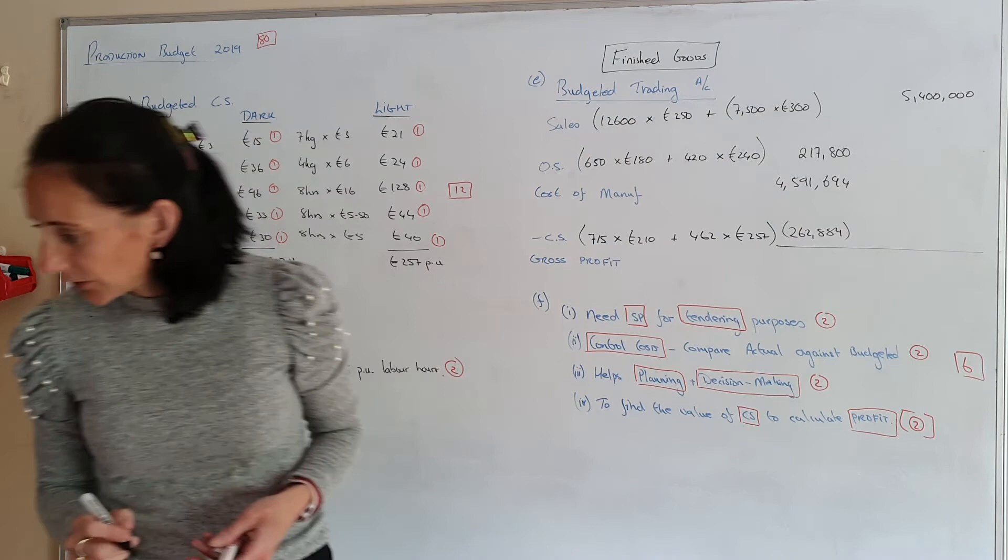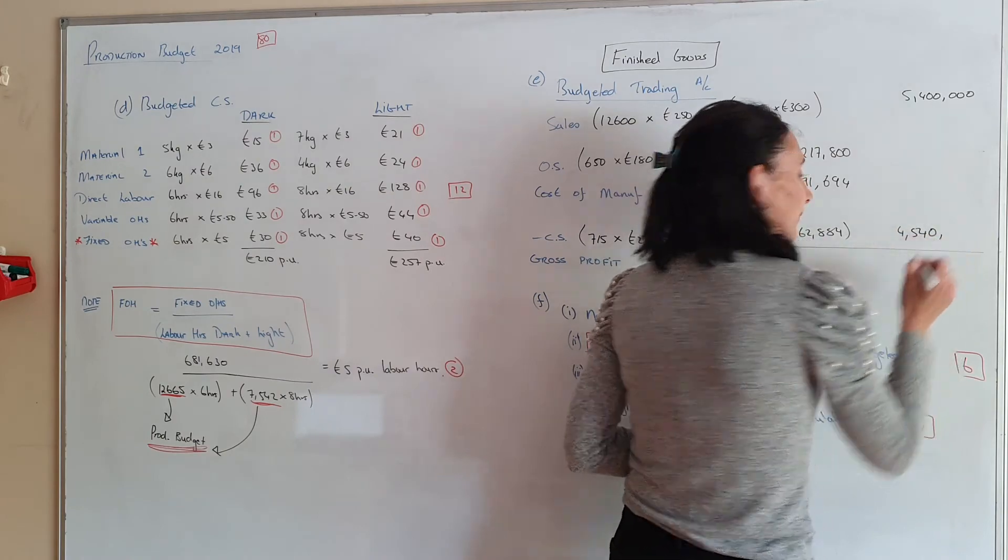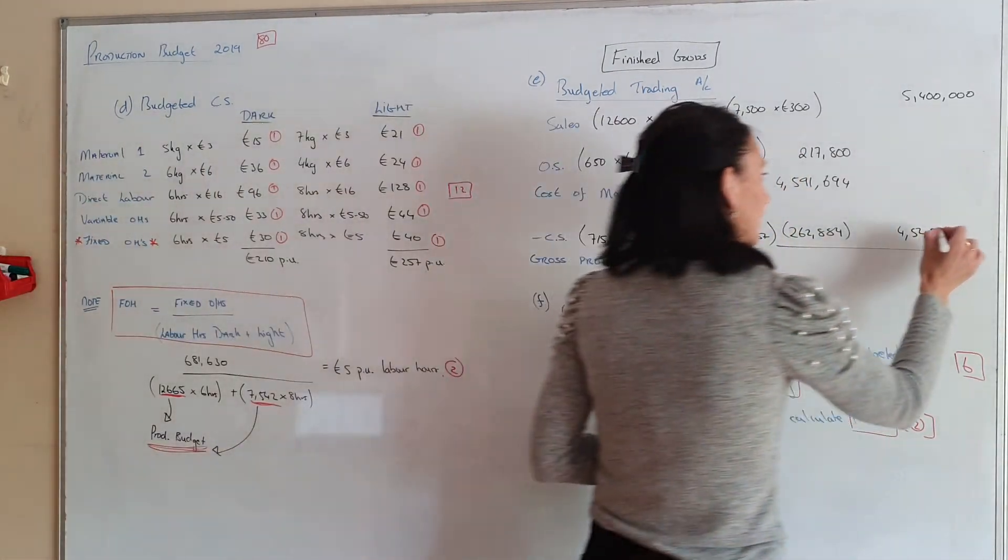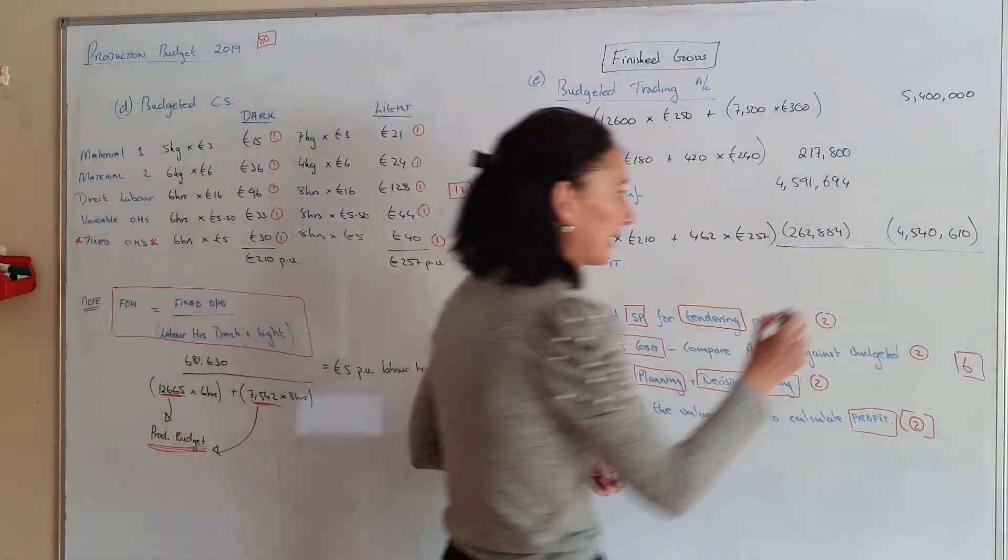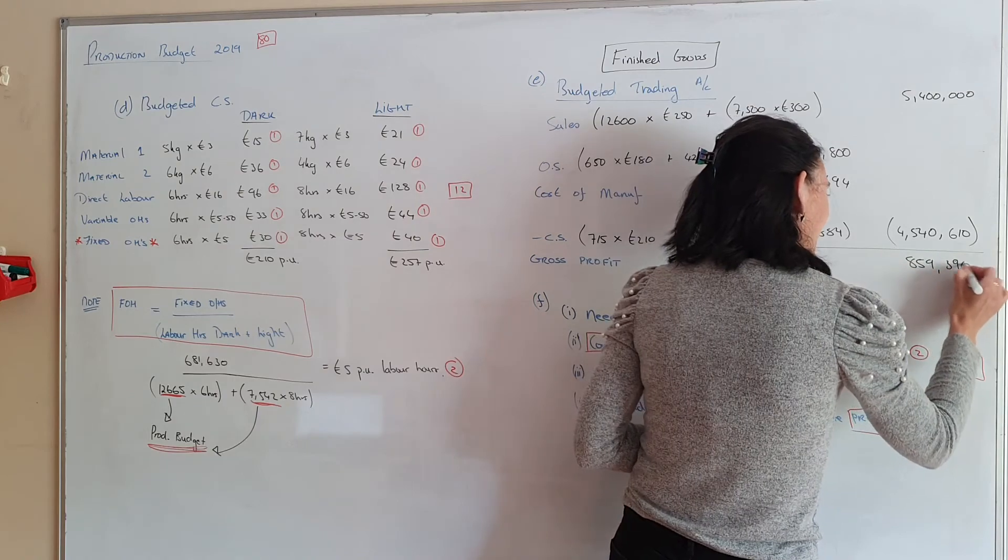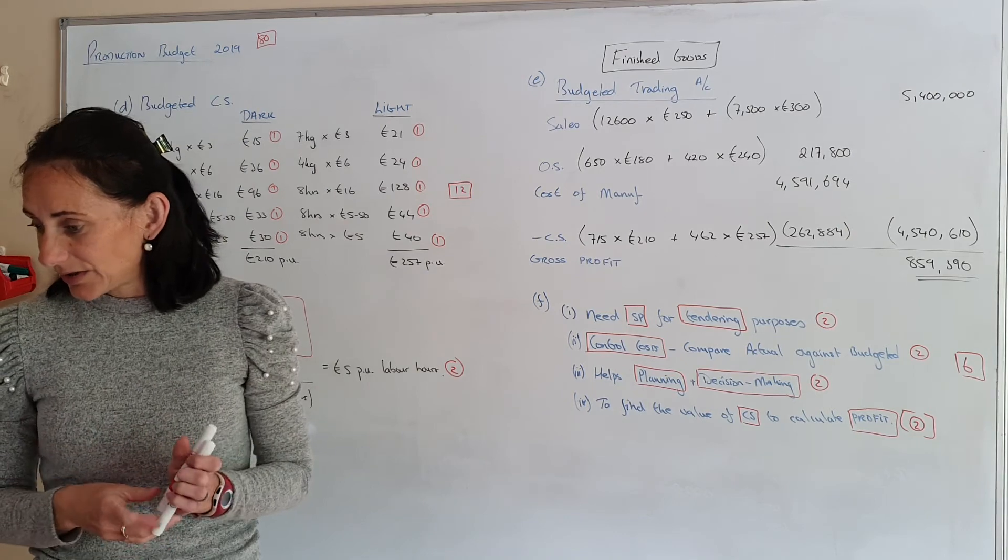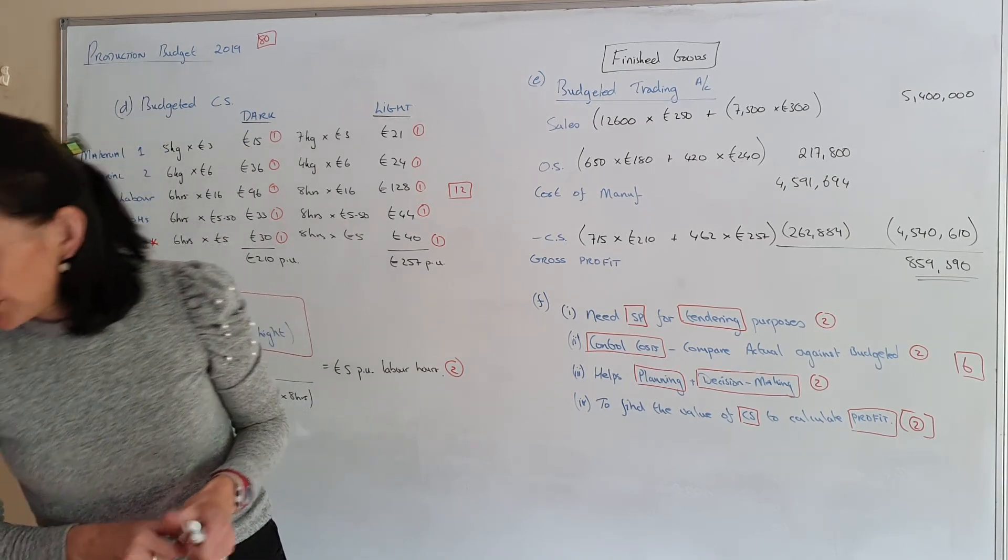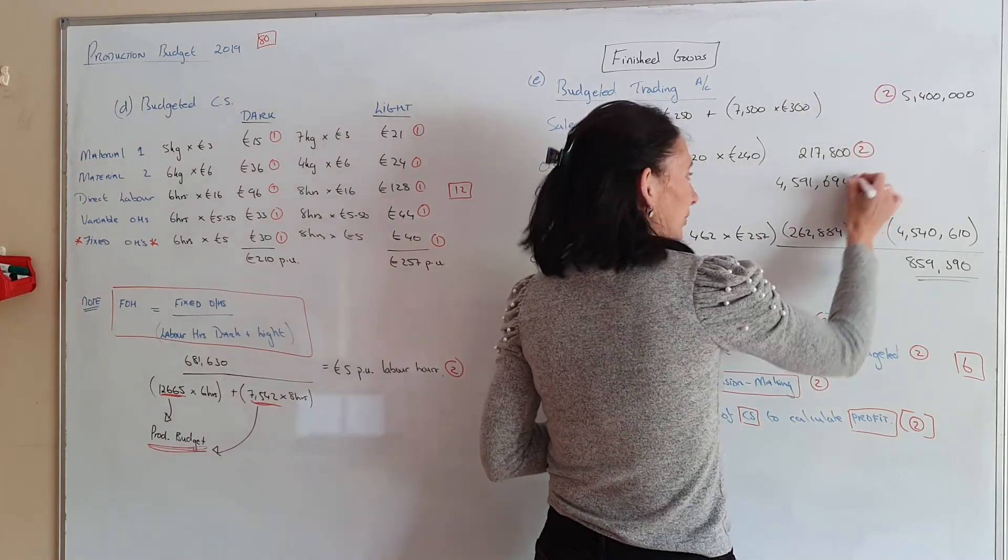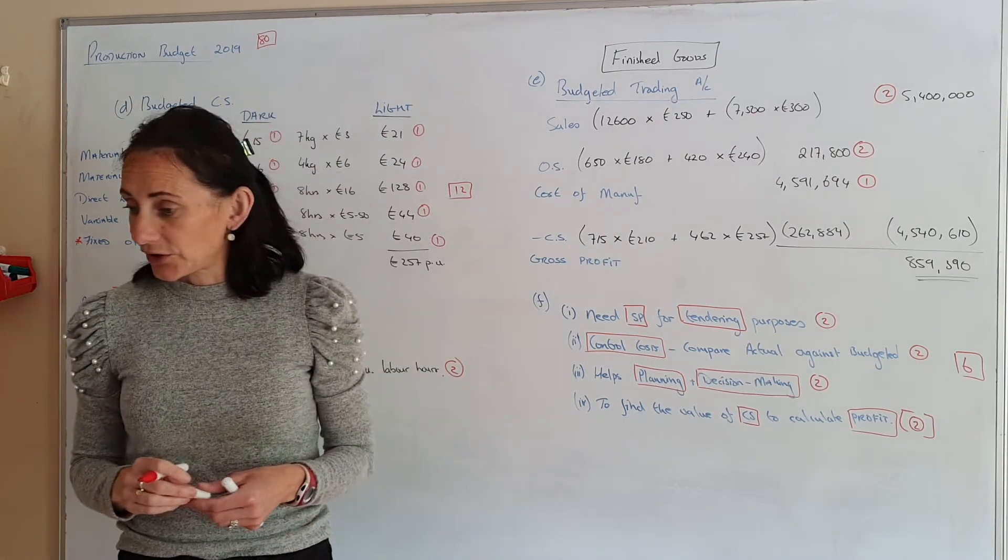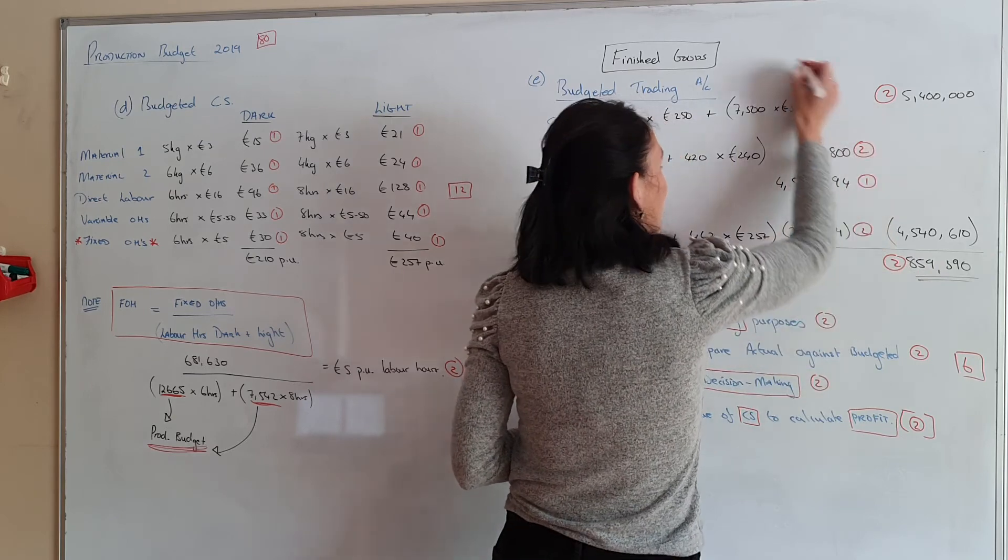Okay so that gives you €4,540,610. And that will give you a gross profit of €859,390. It's actually a really nice question in the exam. When it comes up straight. There's not a lot of complications in it. So the way they're marking this. 2, 2, this only gets 1 because you've already got marks for that figure. It's a figure that's just been transferred. 2, and 2. So 2, 4, 6, 8, 9 in total for this part.